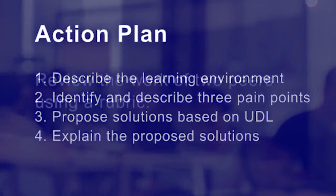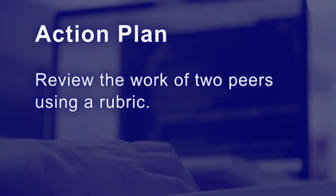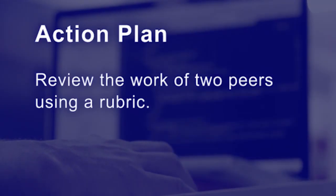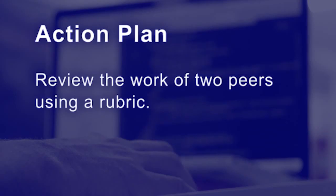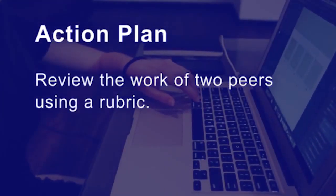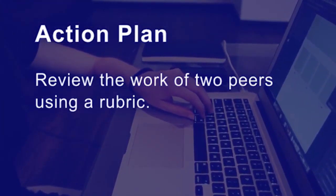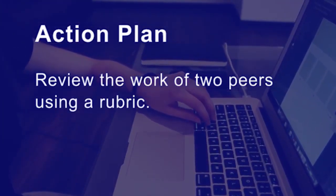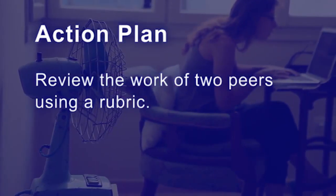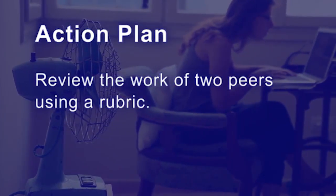After you submit your action plan, you will be asked to review two of your peers' work using a rubric. A rubric is a scoring tool that contains criteria according to which action plans will be evaluated. Please make sure you are familiar with the rubric before you start writing your action plan — it will make this assignment easier because you will know exactly what you need to include in order to get full points.